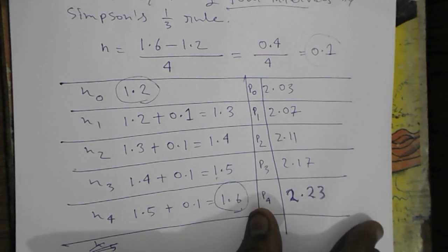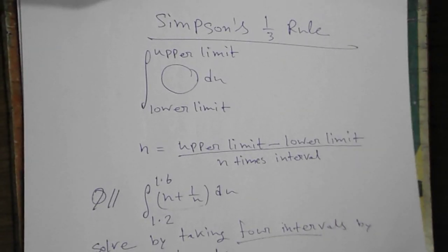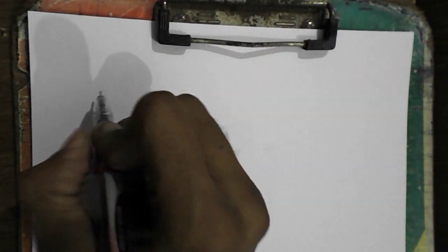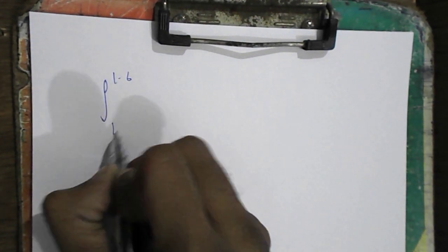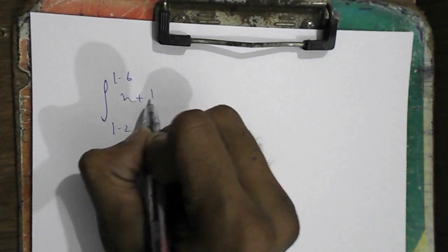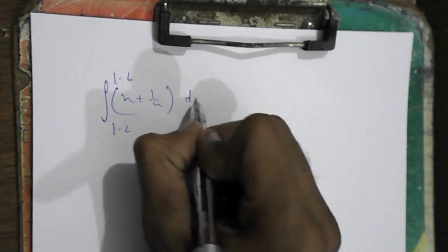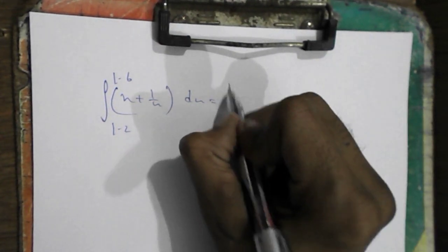Now what we will do is in the next phase. The main formula is, our math was 1.2 to 1.6, x plus 1 by x dx. Equal to the formula is h by 3.